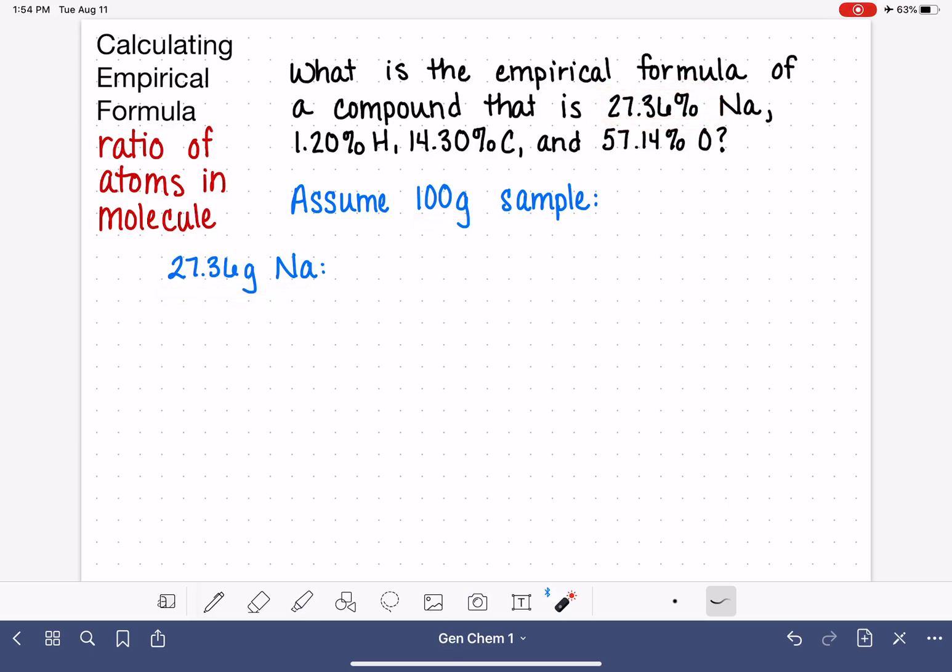So that's the first assumption that I'm going to make, and I'm going to do the same thing for the rest of the elements here. So we have a 100 gram sample that's 1.2% hydrogen, which means that we have 1.2 grams of hydrogen. And our sample is 14.30% carbon. So that means that we have 14.30 grams of carbon if we had a 100 gram sample.